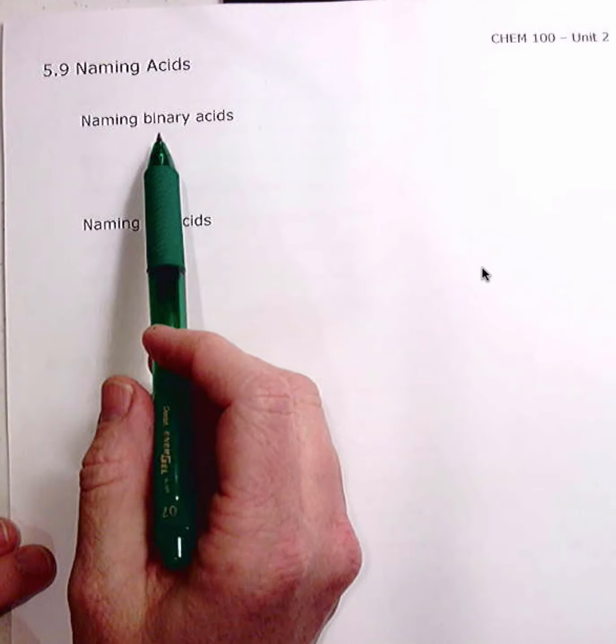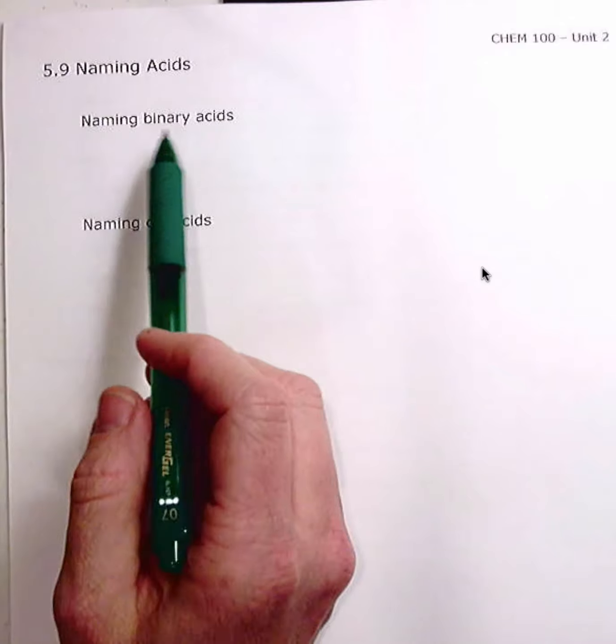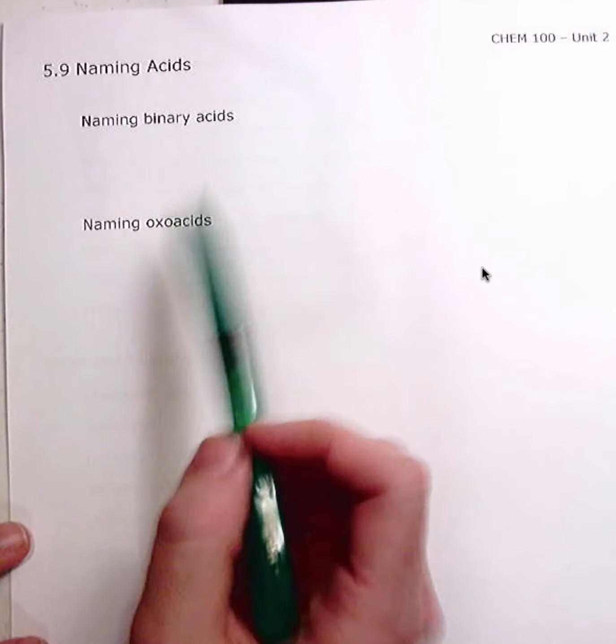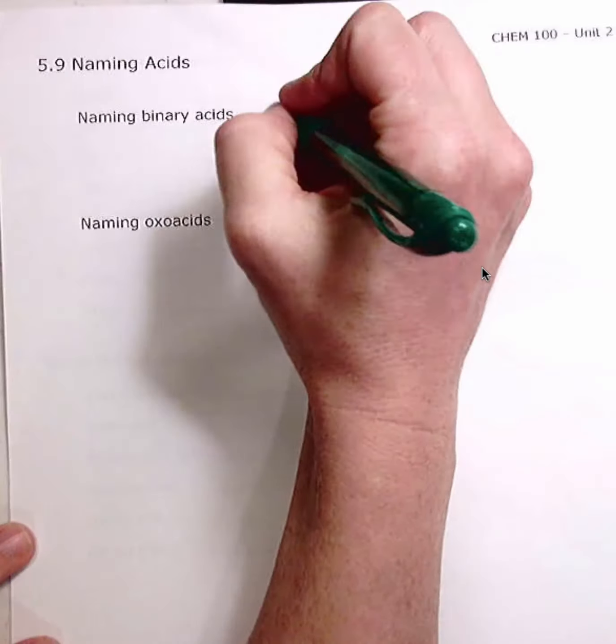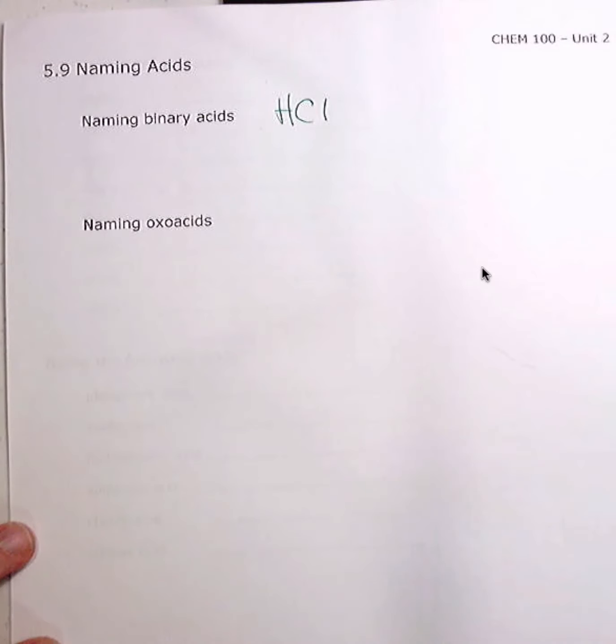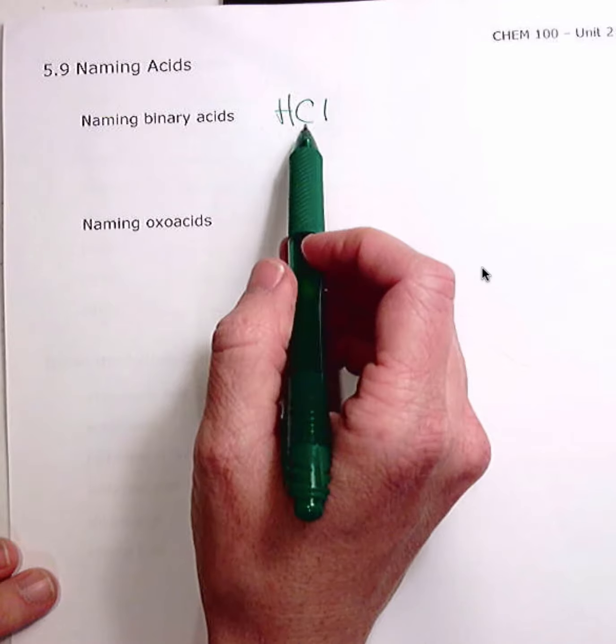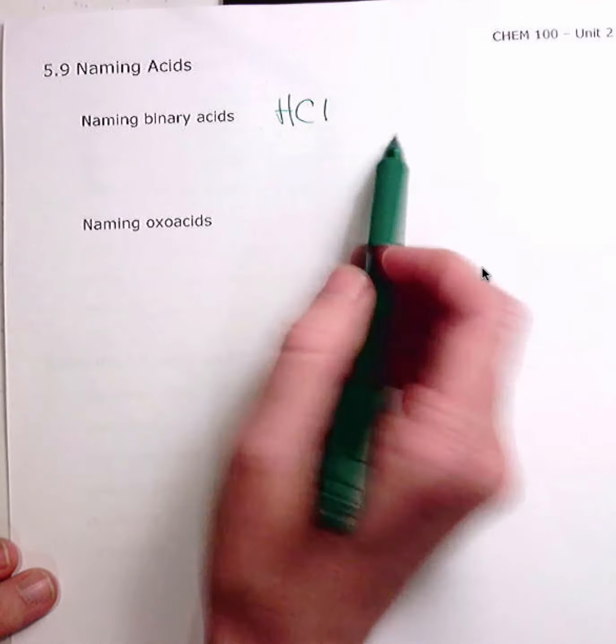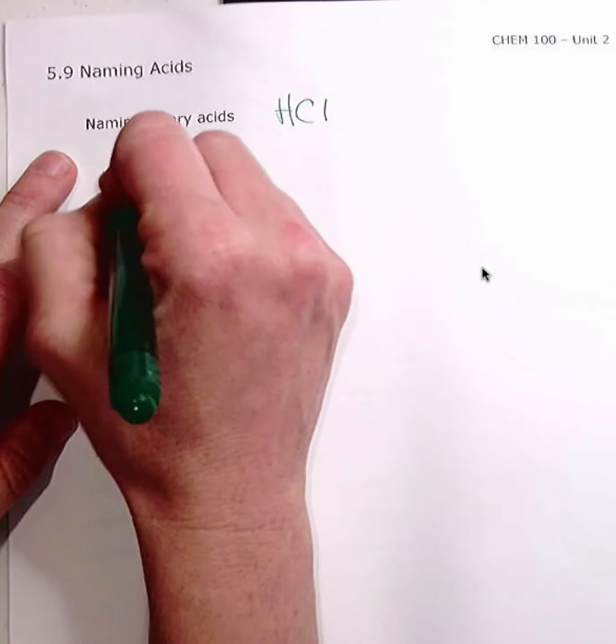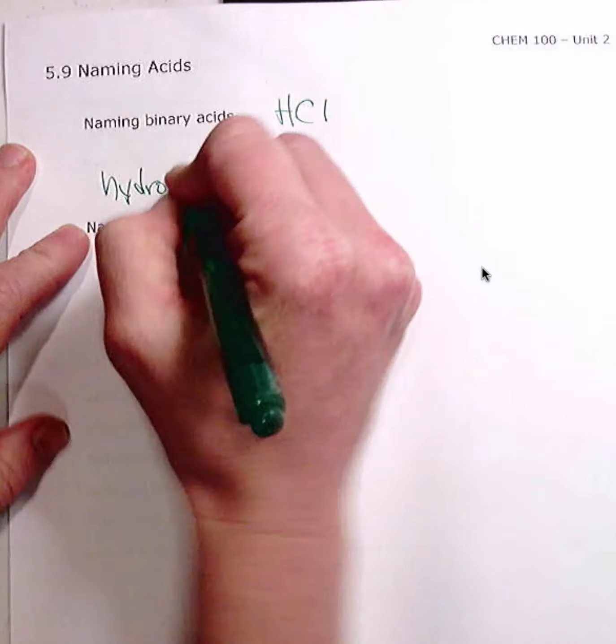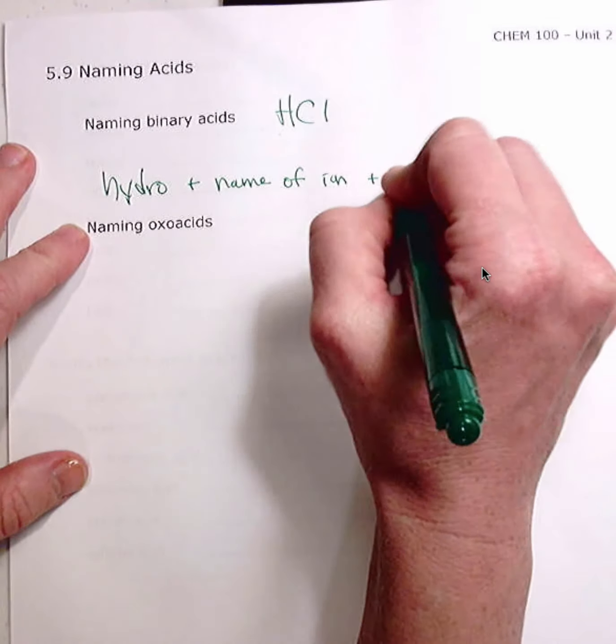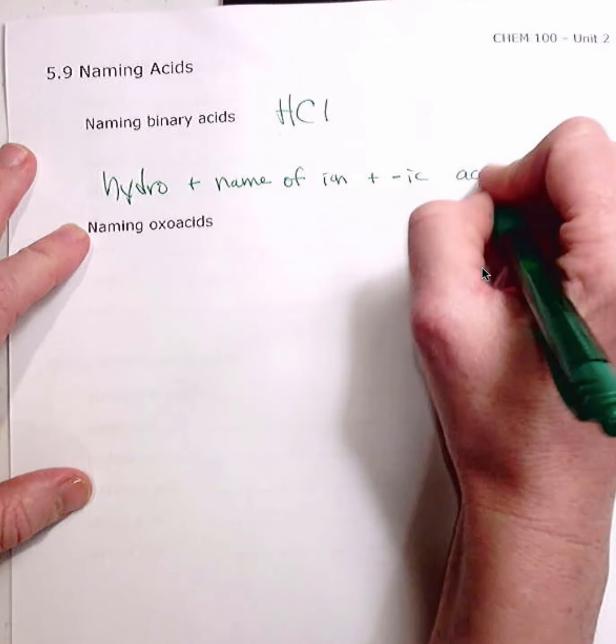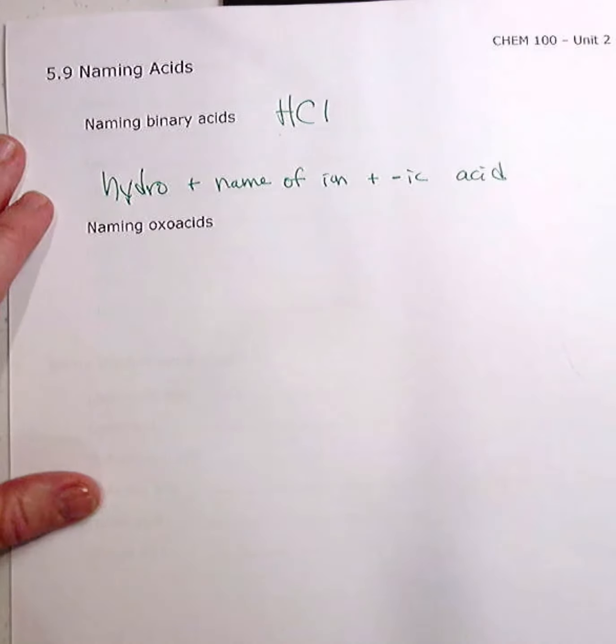So there are two types of acids that we're going to learn how to name. And they're naming binary acids and oxoacids. So I'll give you an example of what a binary acid is. This would be like HCl. And so they're pretty straightforward. You're just going to say hydro and then chloric. So it's hydro plus the name of ion plus ic and then space acid. So this is hydrochloric acid.